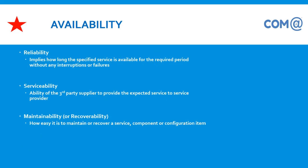Reliability implies how long a specified service is available for a required period. For example, if a printer's requirement is 24x7 availability, it should always be available. We cannot say the printer is unavailable between 6 and 9 in the morning — that will be taken as an issue, and we will have to provide justification for why the printer is not available during that time. We must ensure services are available always to end users.